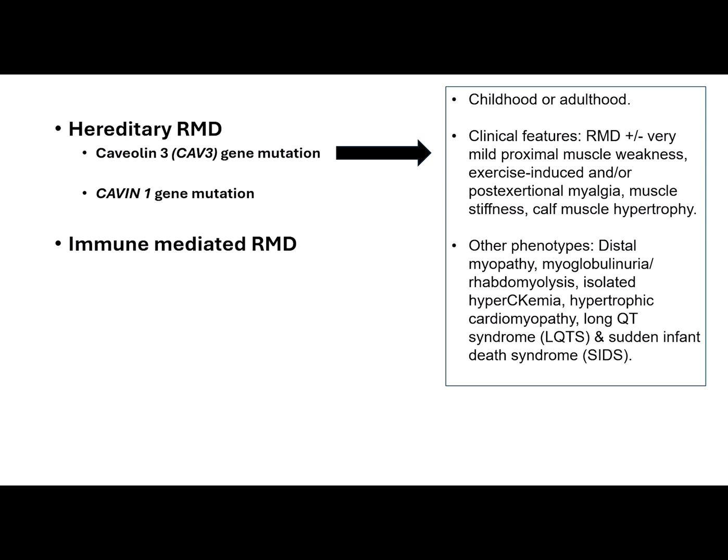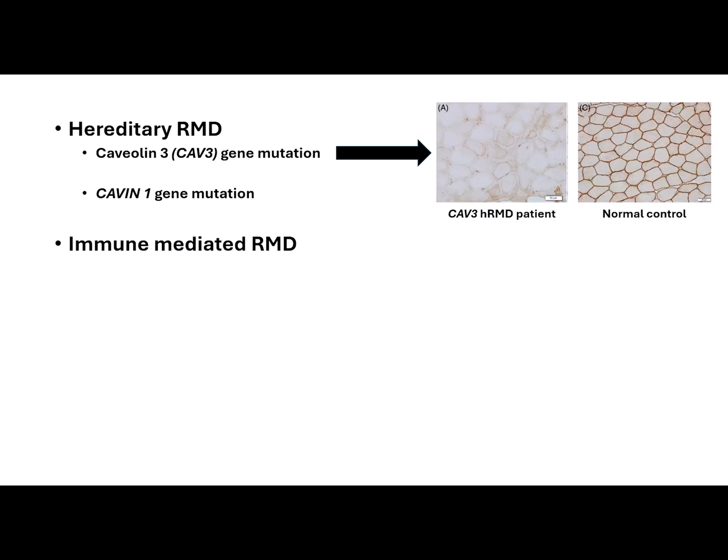Common clinical features are those of rippling muscle disease with or without mild proximal weakness, exercise-induced and/or post-exertional myalgia, and calf muscle hypertrophy. Other phenotypes include distal myopathy, myoglobinuria, rhabdomyolysis, isolated hyperCKemia, hypertrophic cardiomyopathy, and long QT syndrome and sudden infant death syndrome. Muscle caveolin-3 immunoreactivity is often absent or diffusely reduced in caveolin-3 rippling muscle disease compared with a normal control, as shown in this figure.